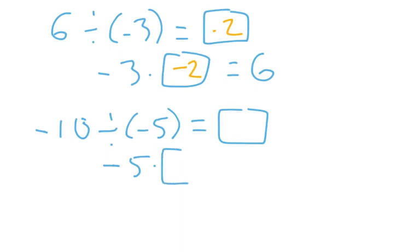Divisor times missing factor. I don't know why that came out shaped funny. Sorry about that. Divisor times missing factor is equal to dividend. What goes in the box to make that work?